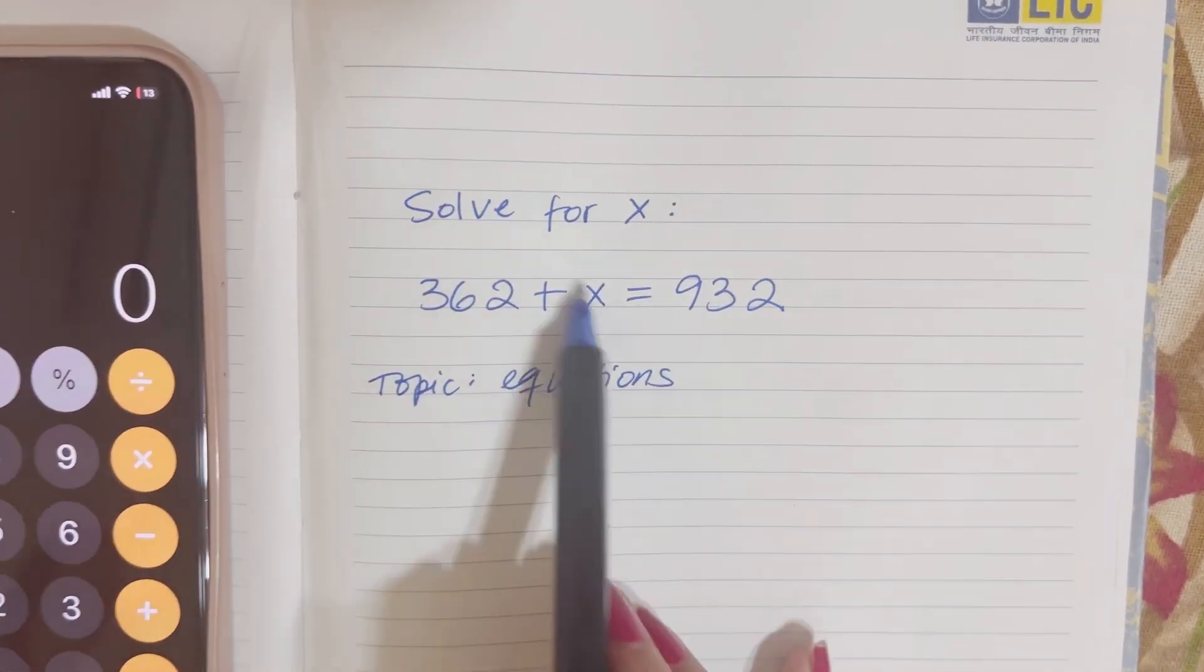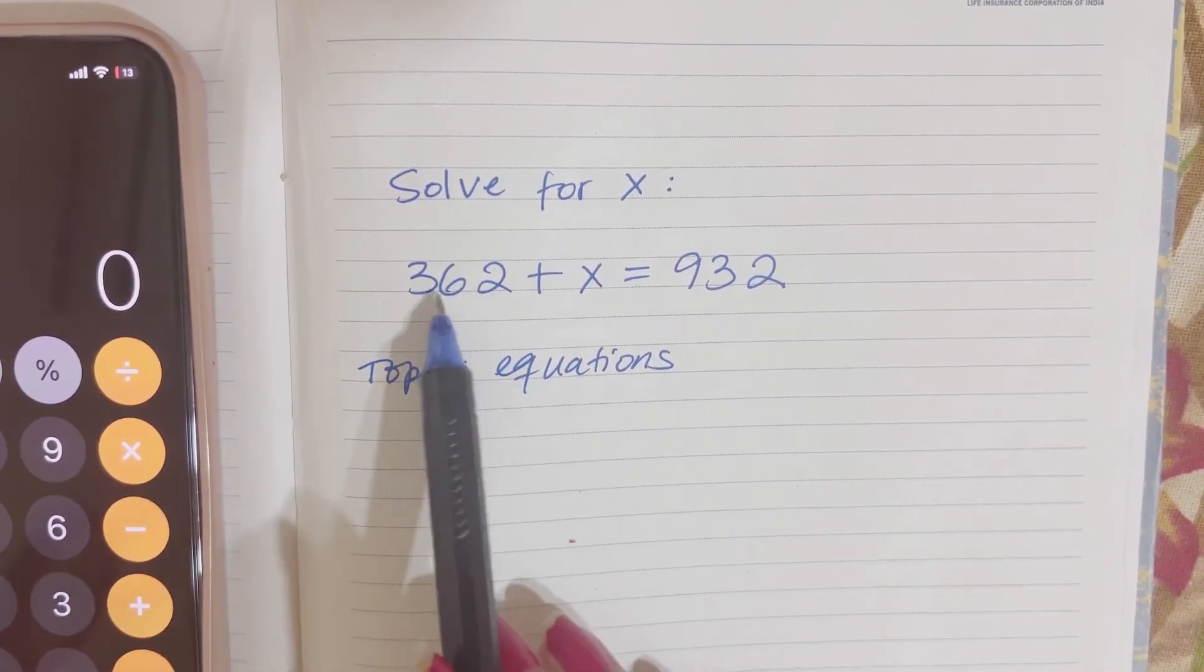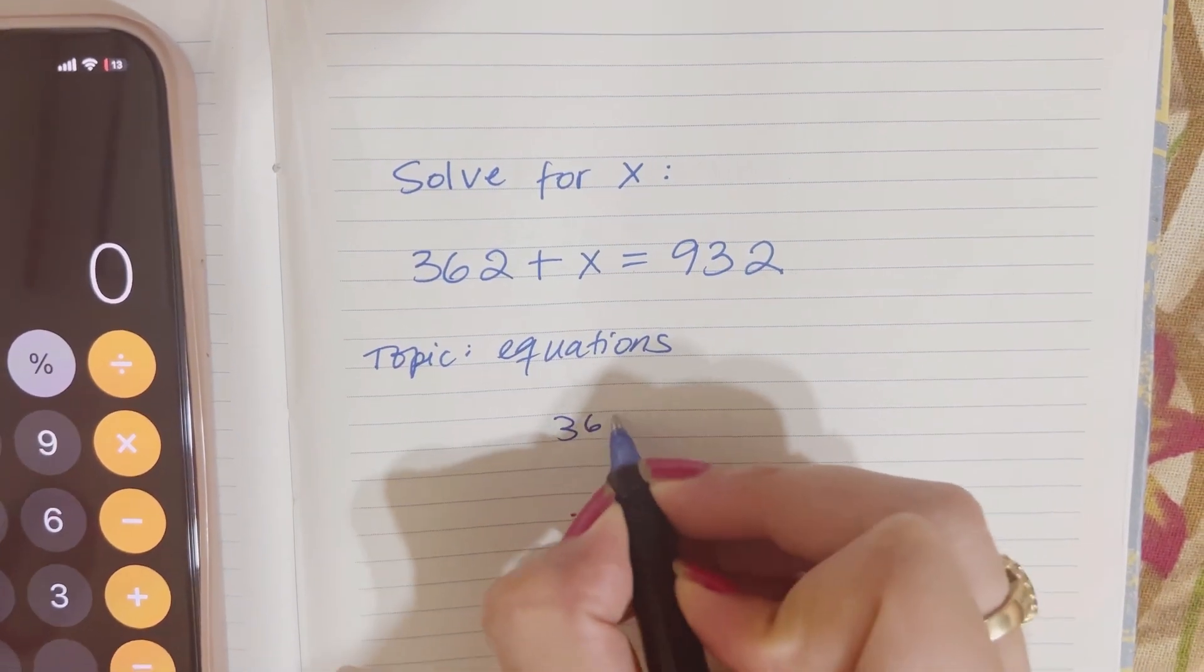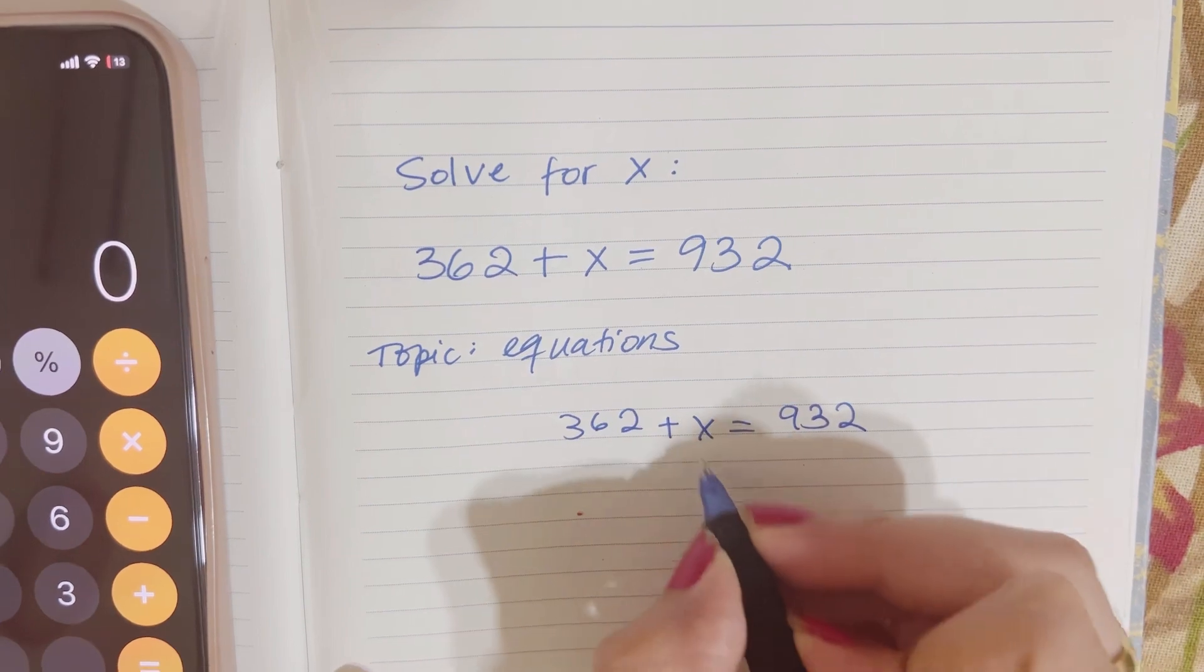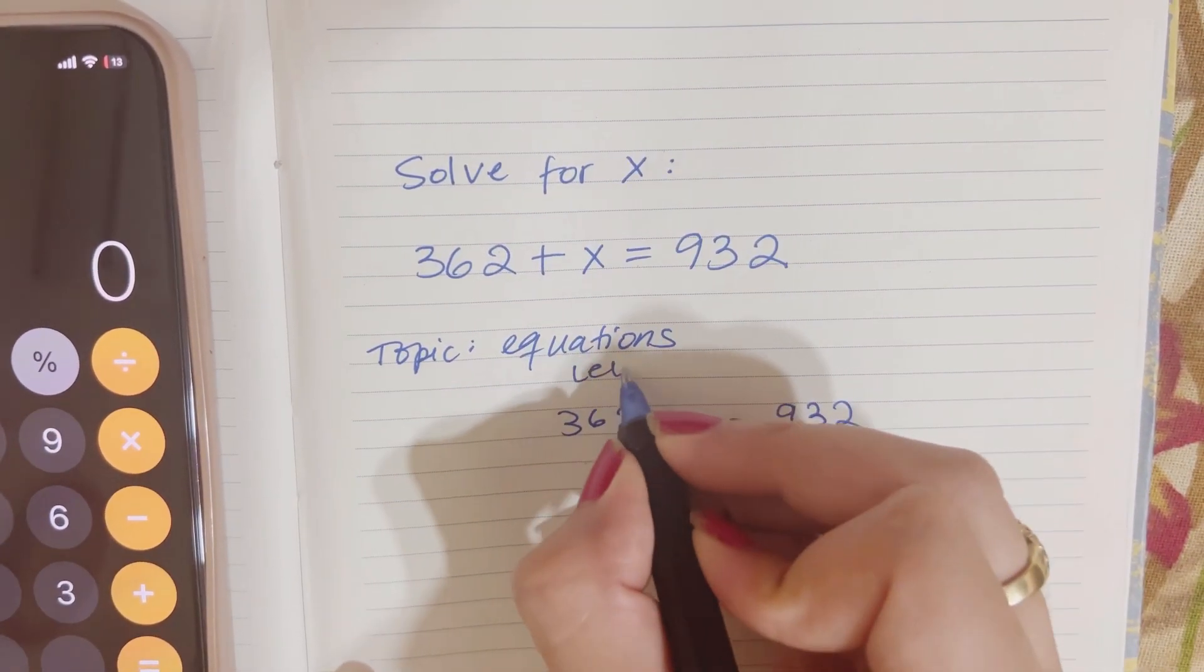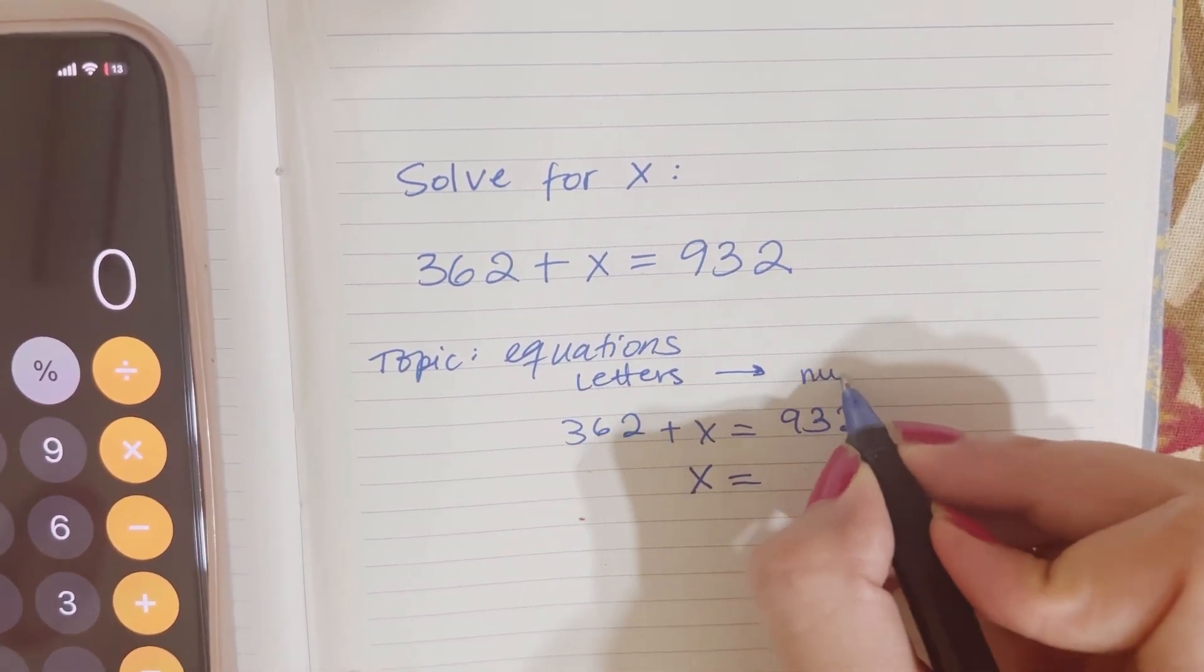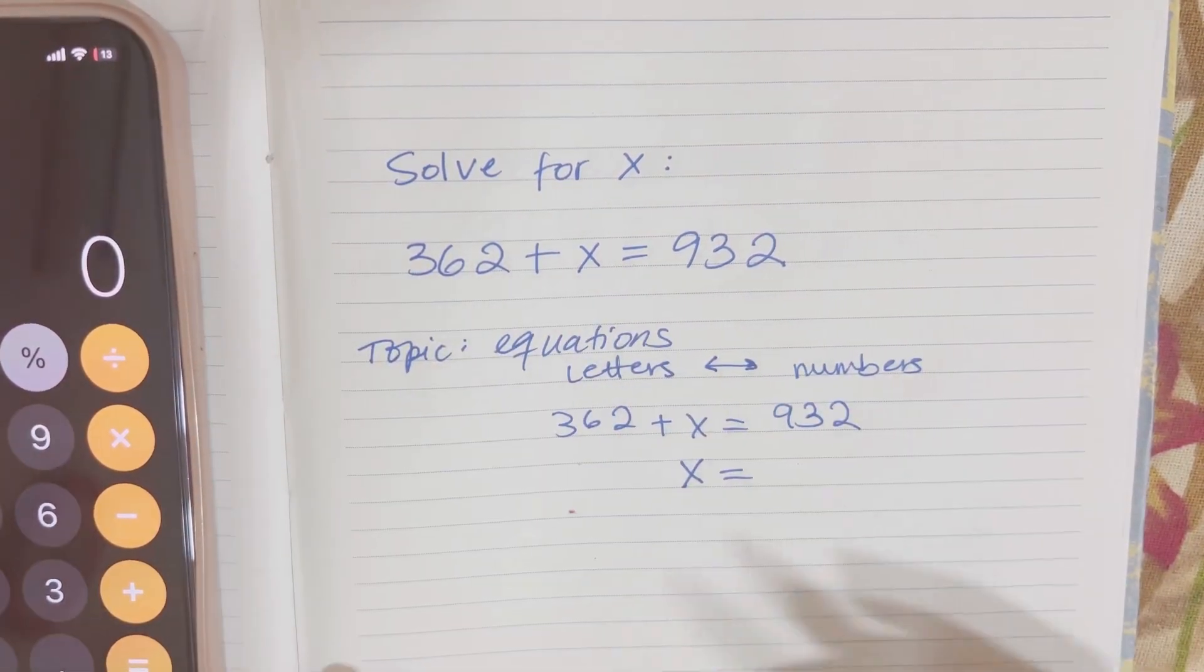For this question, we need to solve for x, and we need to know how to solve equations. We have this one right here. I'm just going to copy it right here. What you do is x stays alone. Remember, letters on one side and numbers on the other side, or any side, but you just group them according to that.